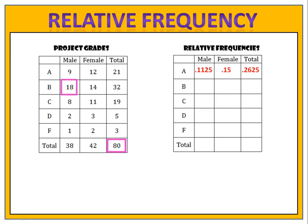Now onto the second row: males who got a B. 18 out of 80, which comes out to 0.225. 22.5% of the class were males who got Bs. The remaining values in this frequency table are for you to find.